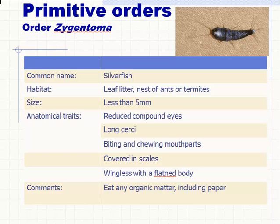The class Insecta is divided into 33 orders. Remember, order is beneath class in the hierarchical classification of life. We're only going to look at a subsample of these 33. Insects in a particular order must share common characteristics — that's why they're in the same order. They're pigeonholed into ever more specific categories the further down you go in the hierarchical scale of classification.